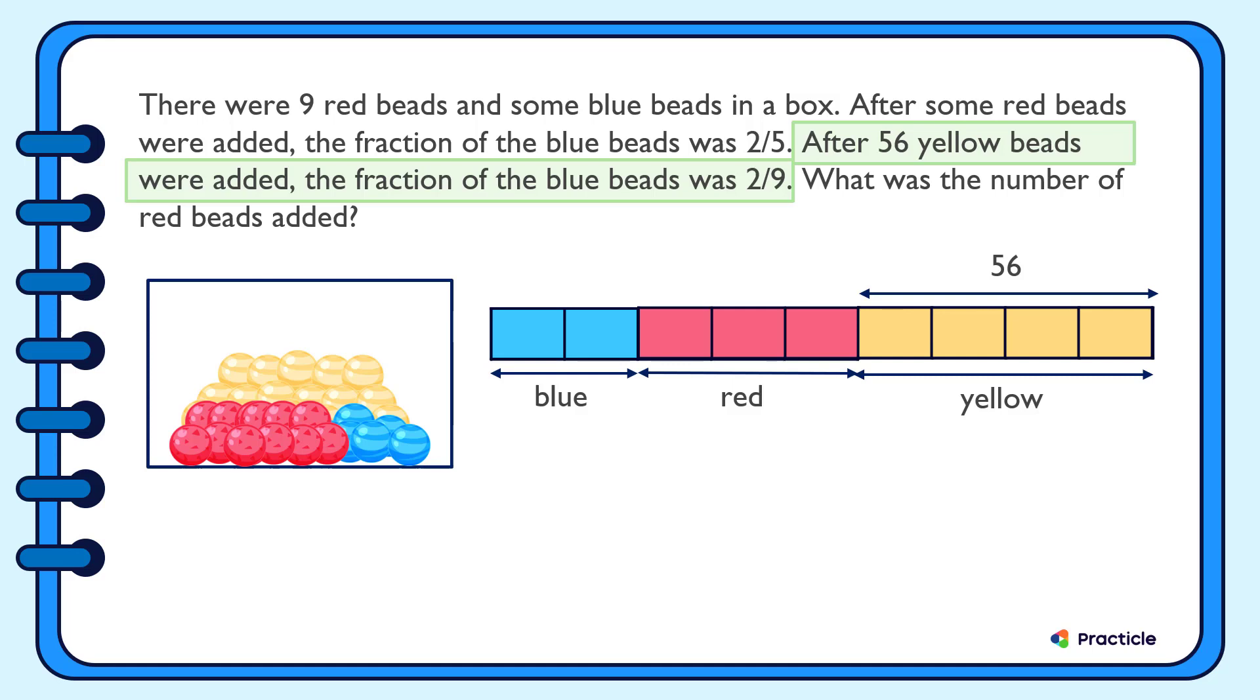Now let's look at what the question is asking us to solve. What was the number of red beads added? Do you know how to make use of our model to find the answer? Let's think about what we can tell from the model, okay? We know that 4 units represent 56 beads. Since we want to find the number of red beads that was added, we need to know how many red beads there were in the end. Make sense?